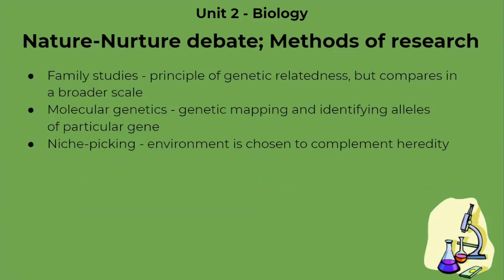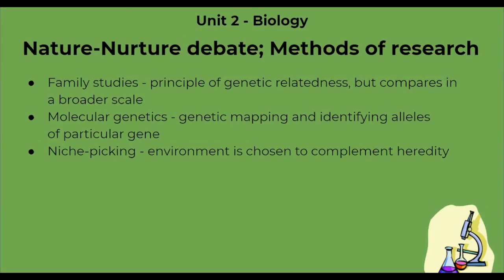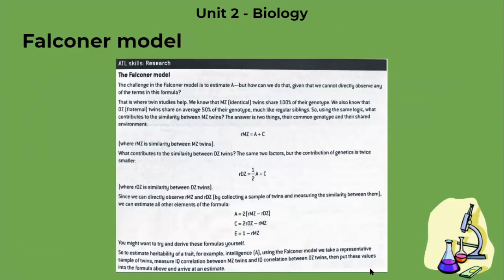Molecular genetics is the genetic mapping and identifying of alleles of a particular gene of a particular individual — picking out a specific thing. Niche picking suggests that our environment is chosen to complement our heredity. Biologically related children would usually select similar environments, which can explain the correlation. And this is the Falconer model, which is used for twin studies — this is the formula used to solve for the variables in twin studies.